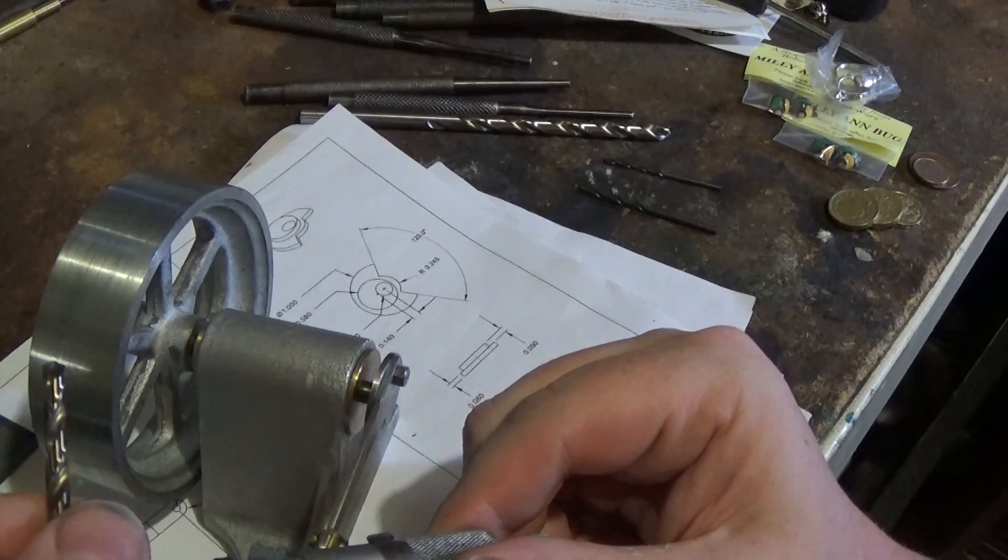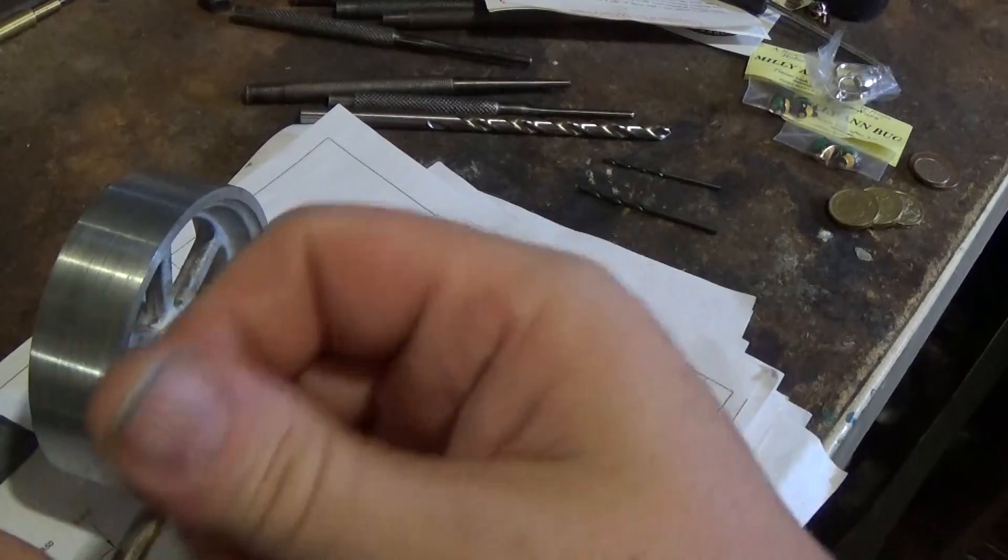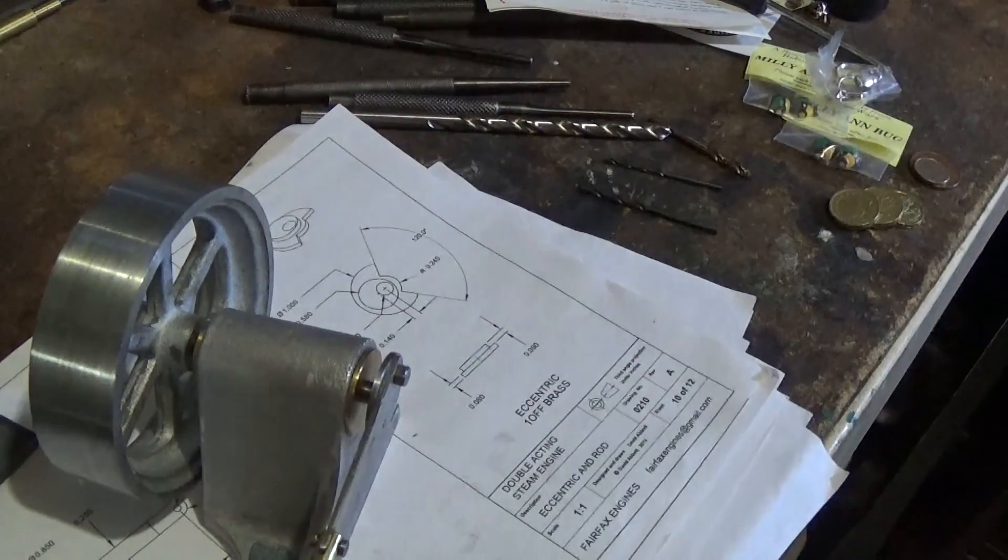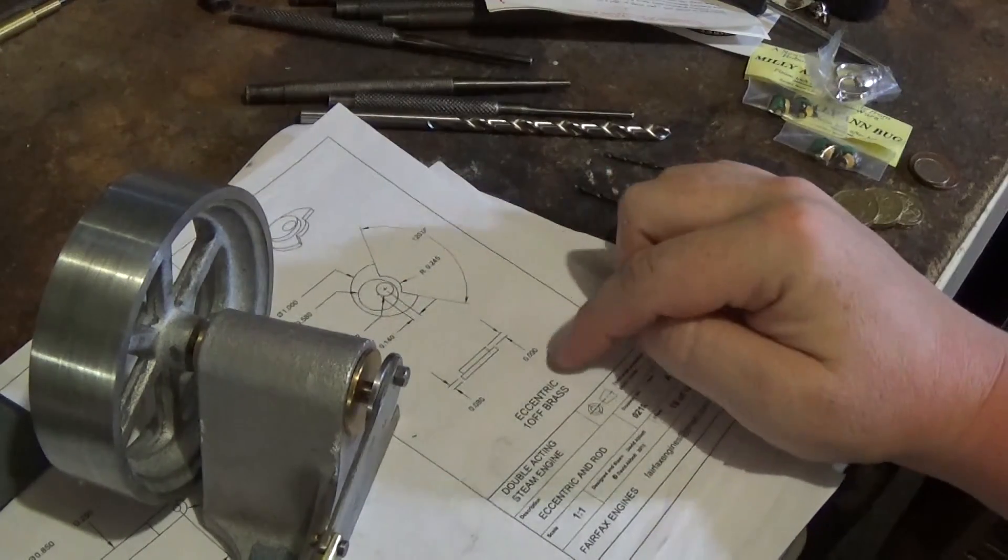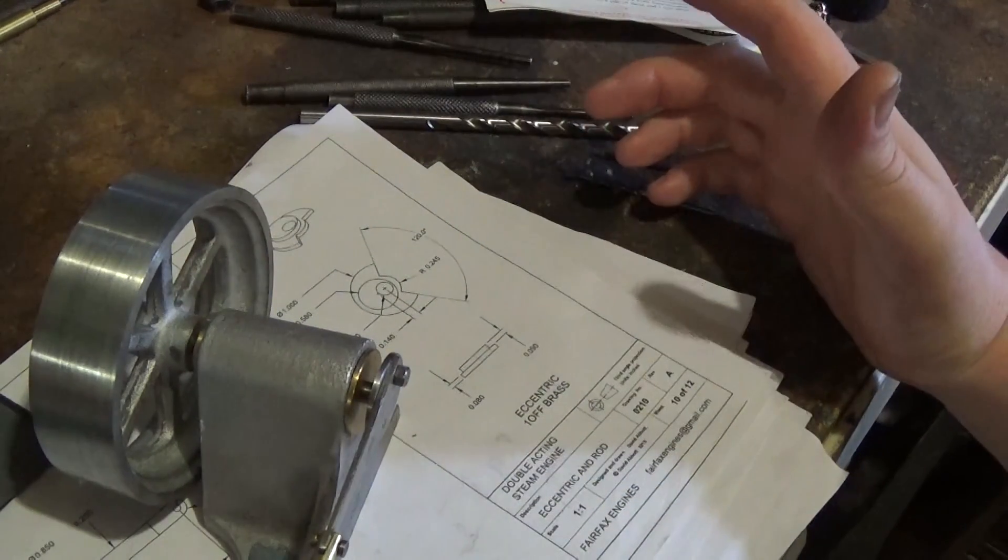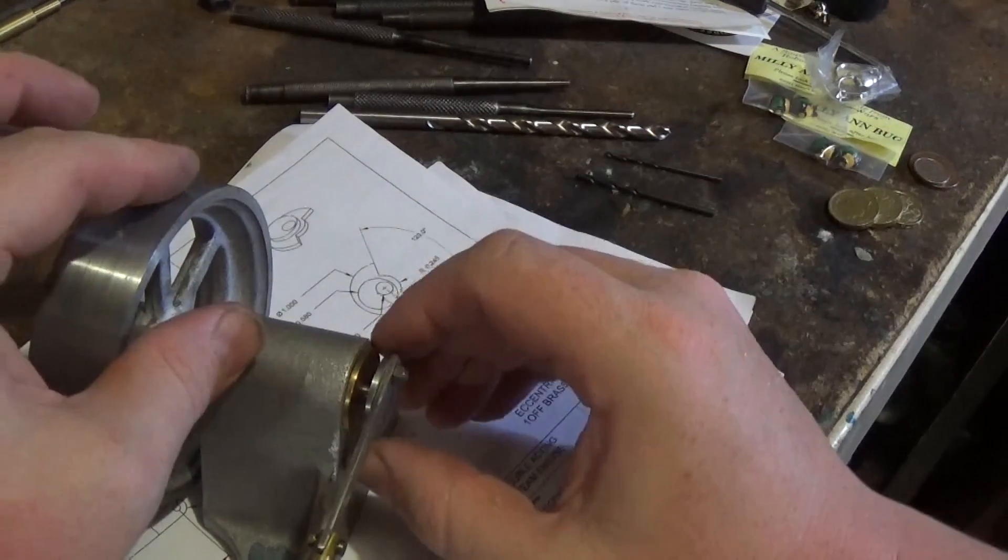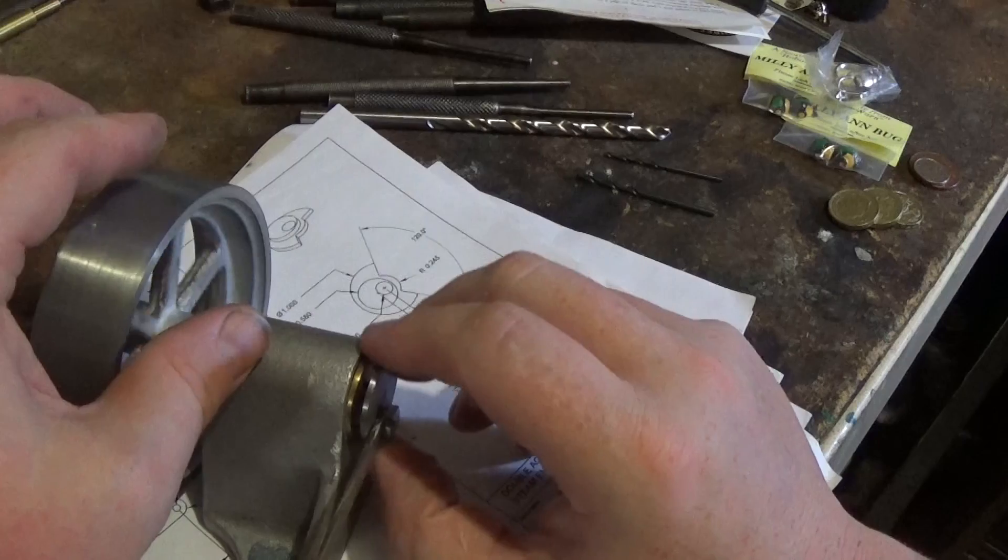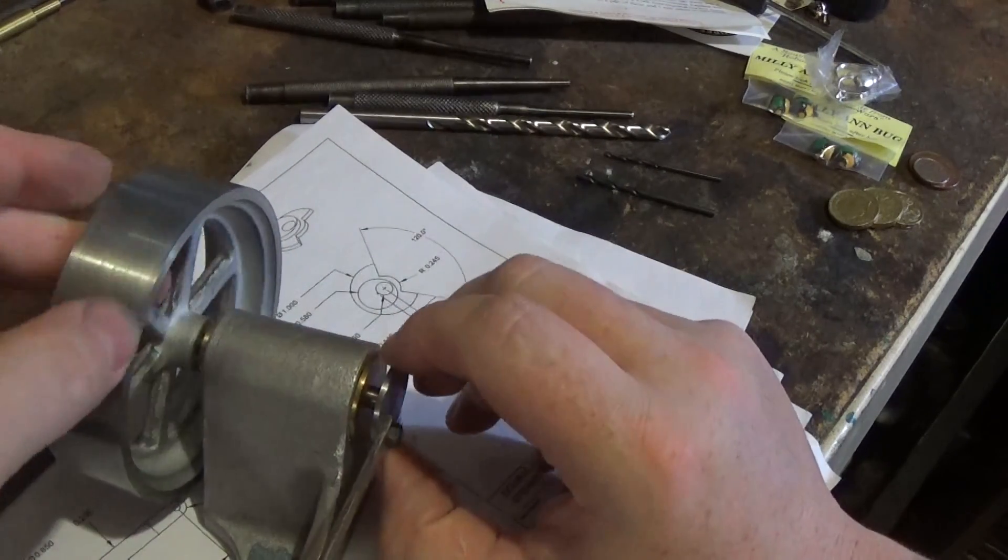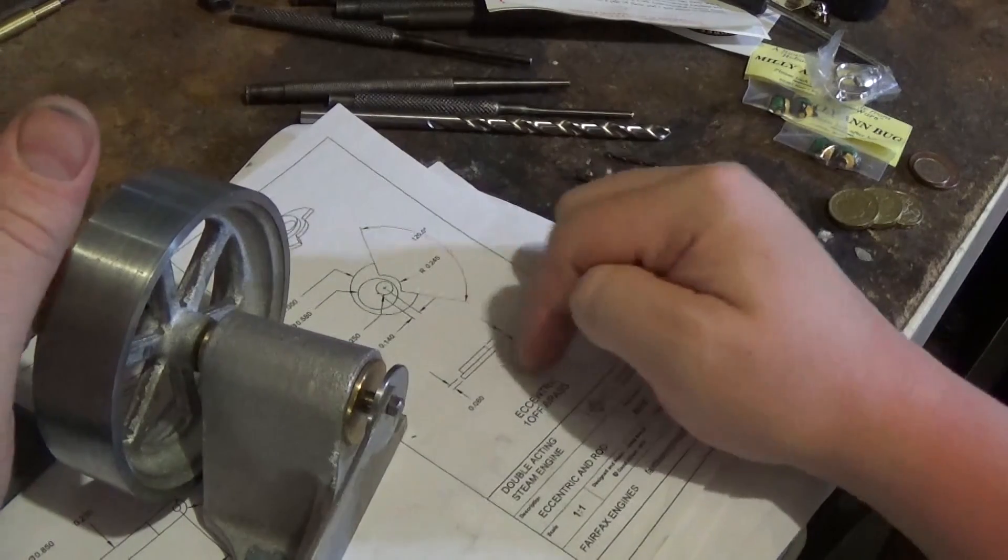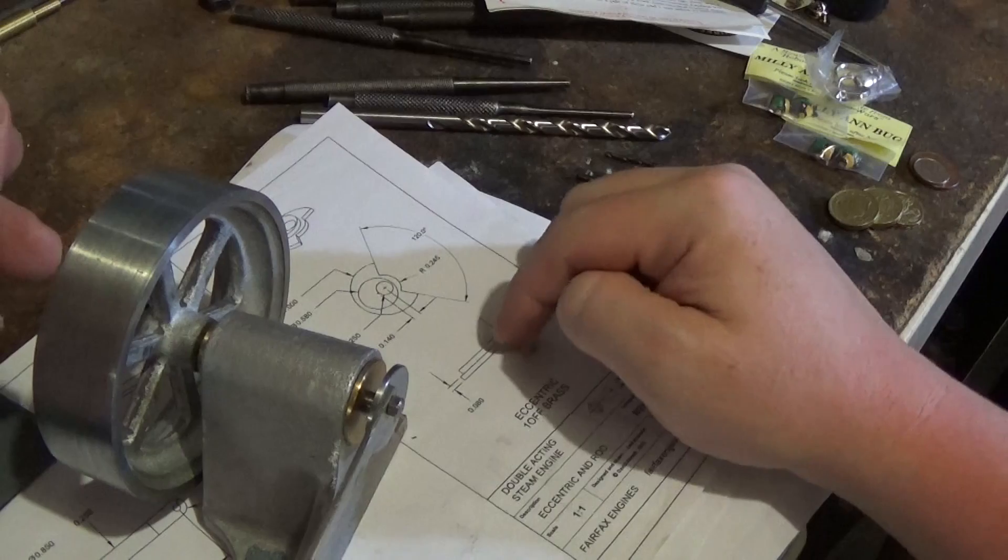Have a look—there's about 178 thou there. As it's drawn here, it's 170 thou there, so we're not that far out actually, to be honest. But it's enough to need a little bit of adjustment, so we're going to make this 178.